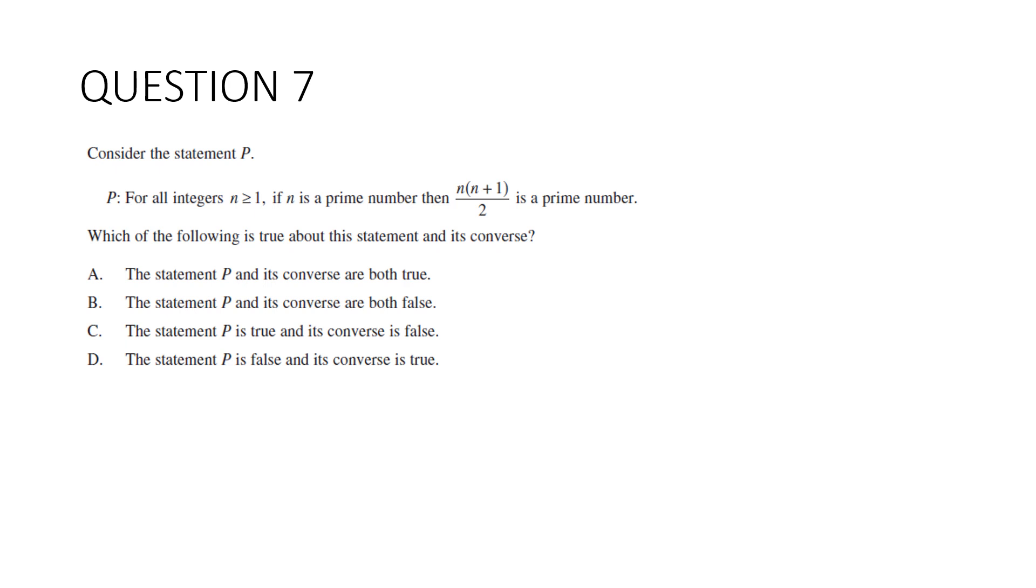Question 7. Consider the statement: for all integers n ≥ 1, if n is prime, then n(n + 1)/2 is also prime. Which of the following is true about the statement and its converse? Let's have a look at the statement first. If n is prime, then this is also prime. Let's check it out. Let's say n equals 3. 3 times 4 over 2 is equal to 6. That is not prime. So the statement is not true.